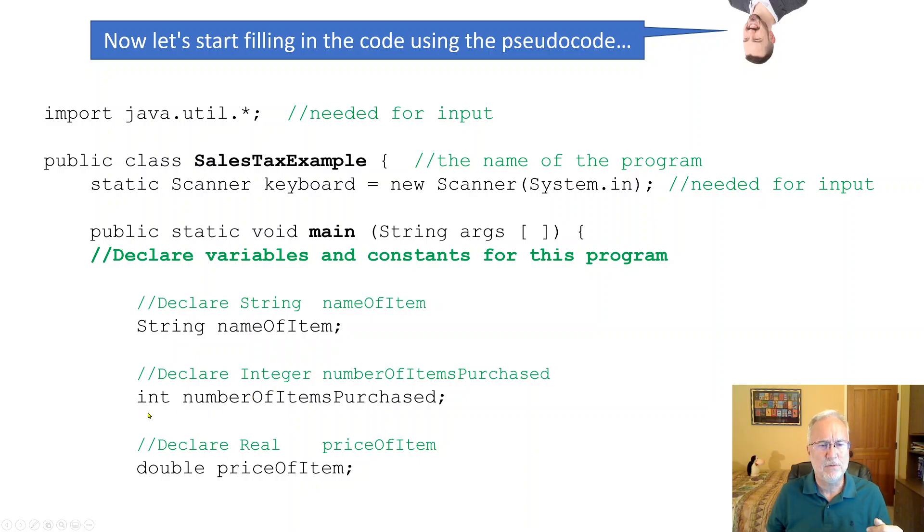Integer in Java, we use int. So number of items purchased. Real is a double. So price of item. So we're just translating here. Pretty simple. Once you know what to do here, the coding is pretty simple. What's real in Java? Double. Double will work just fine.